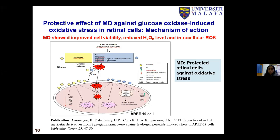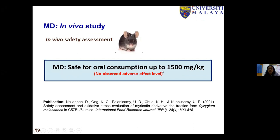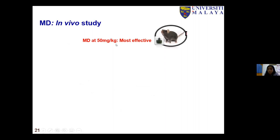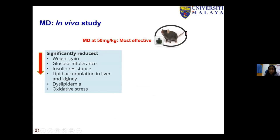After completing my project, a PhD candidate pursued the in vivo investigation of myricetin derivative effects. The derivatives were found to be safe for oral consumption up to 1,500 mg/kg. The protective effect against high-fat diet-induced obesity, glucose intolerance, and oxidative stress in mice was investigated, with findings published in two articles. To summarize, the derivatives at 50 mg/kg were most effective, significantly reducing weight gain, glucose intolerance, insulin resistance, lipid accumulation in liver and kidney, dyslipidemia, and oxidative stress.